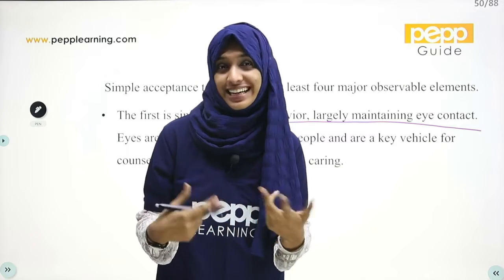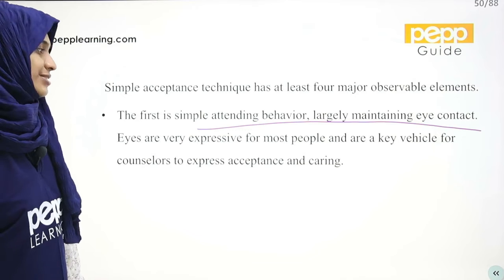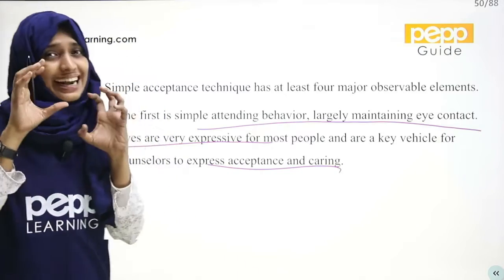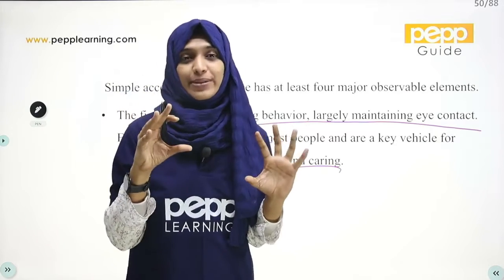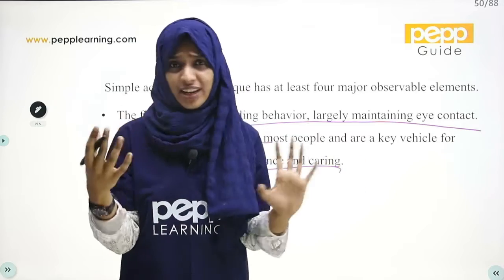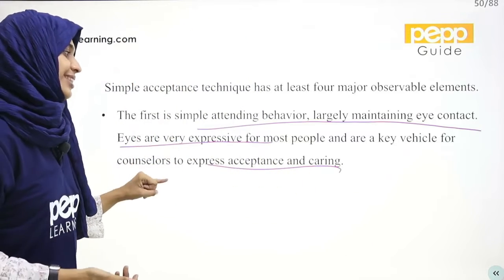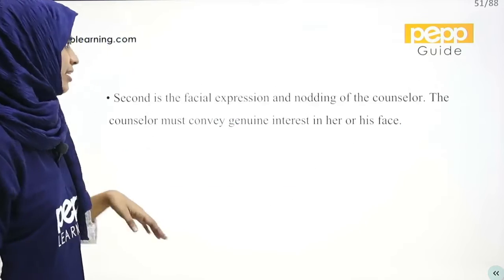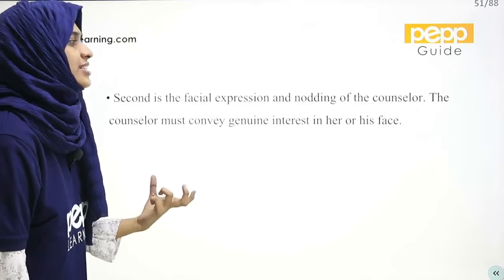Eyes are very expressive for most people and are a key vehicle for the counsellor to express acceptance and caring. We can express acceptance and caring through our eyes. The third point is the facial expression and nodding of the counsellor — the counsellor must convey genuine interest in his or her face.